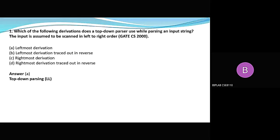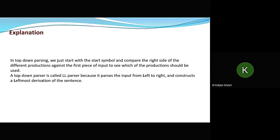The first question, for Krithidip Thokhosh, asks: which of the following derivations does a top-down parser use while parsing an input string, where the input is scanned in left to right order? The correct answer is LL — leftmost derivation.